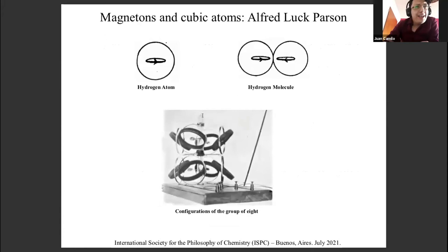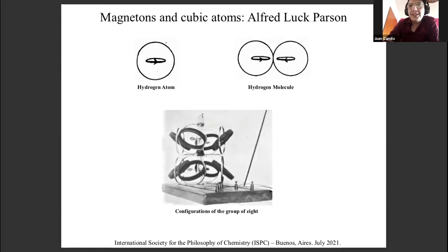Here I'm going to introduce what was actually the work of Alfred Parsons. The essential assumption that makes Parsons' theory interesting was that the electron is in itself a magnetic entity, having in addition to its negative charge the properties of a current circuit of the same order of magnitude of the size of the atom. You can see here two basic models.